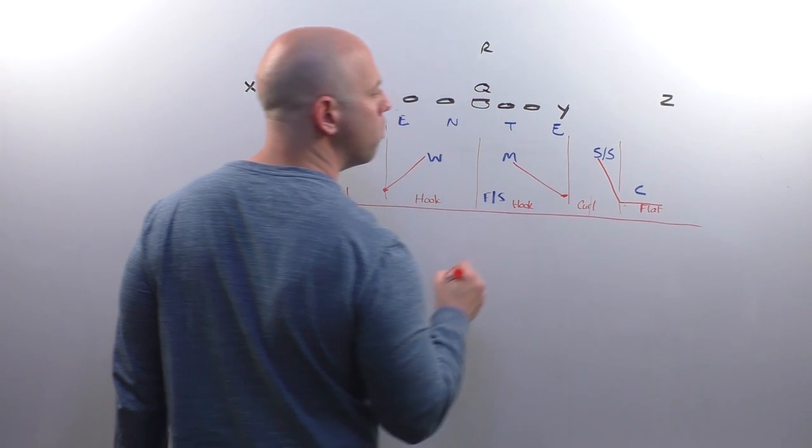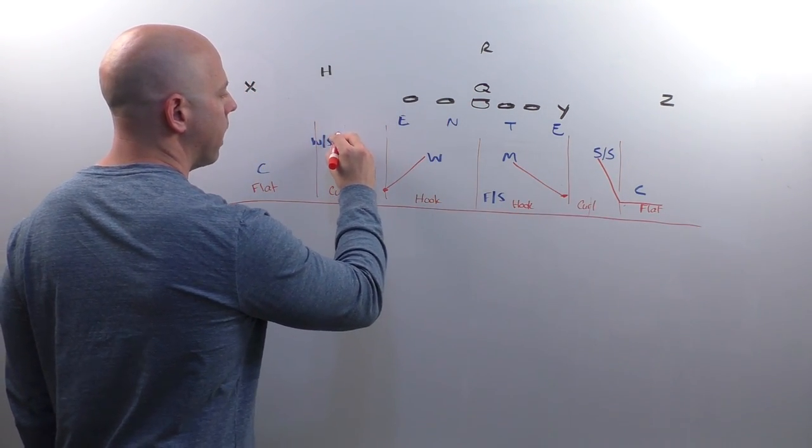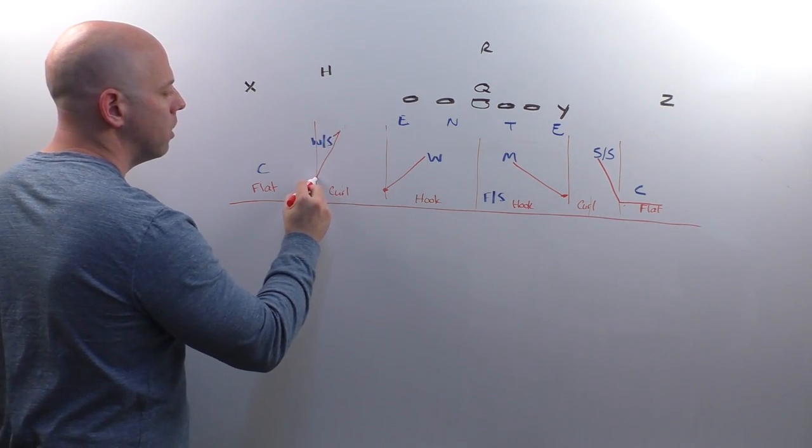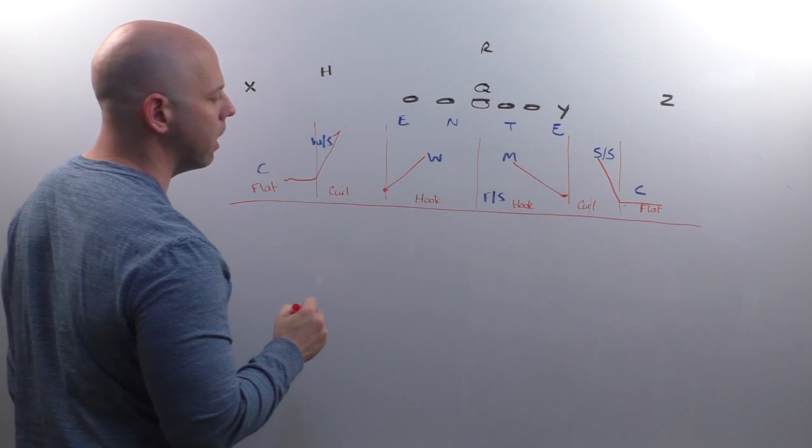For example, if we get a shoot route to the flat, then we'd be widening with that. Same thing over here. Step up, read pass, hook curl, curl flat, and then widen with it as we go.